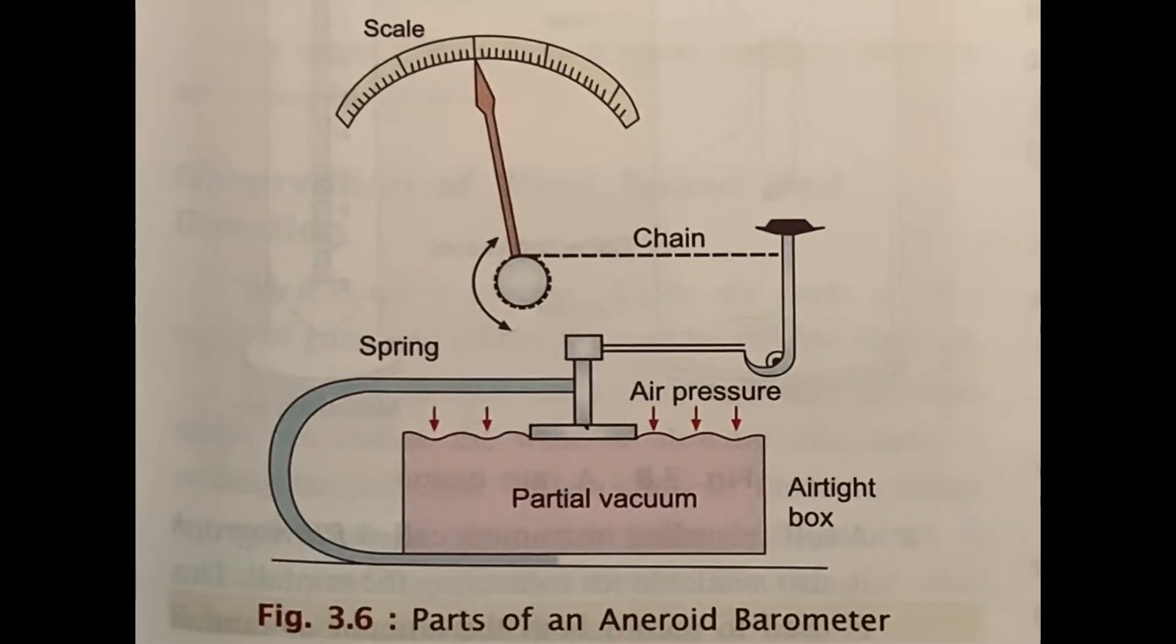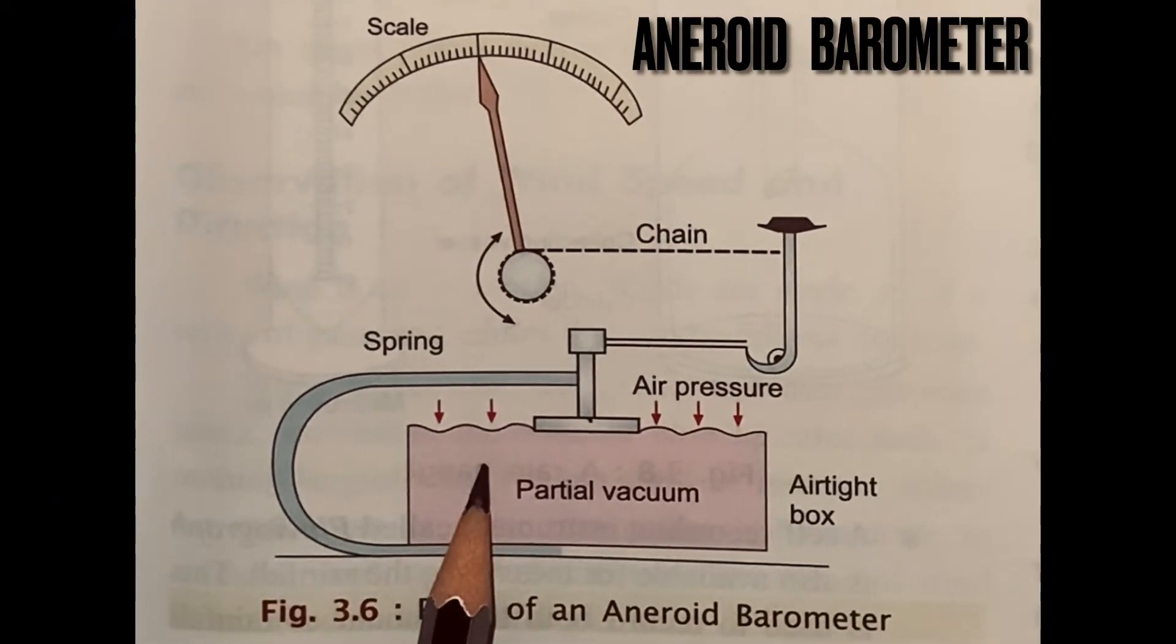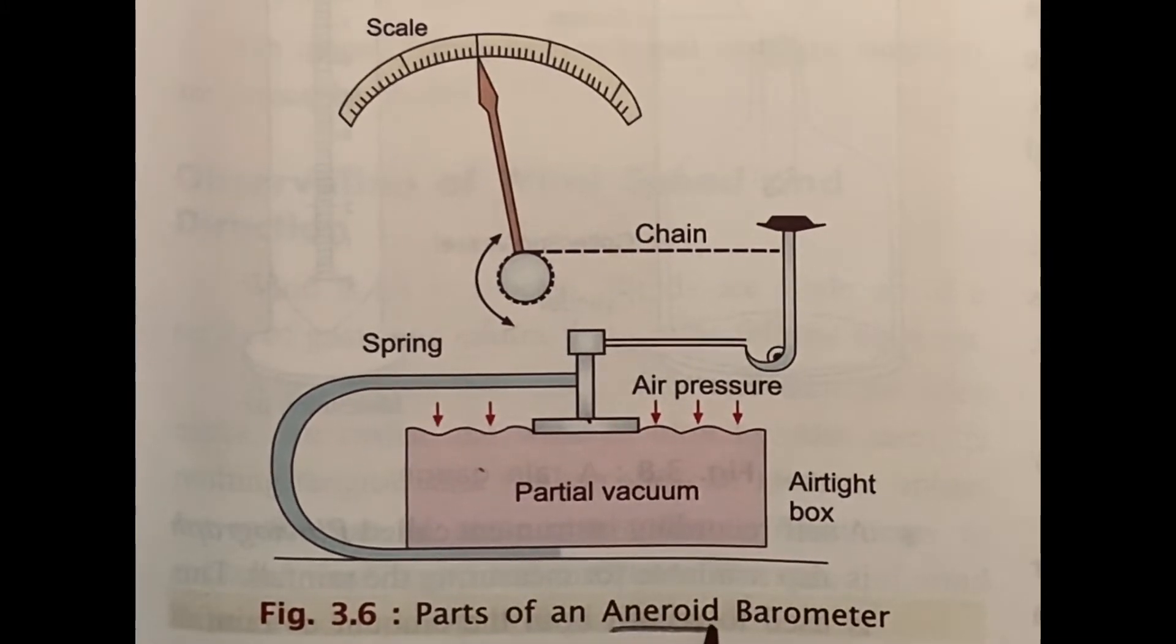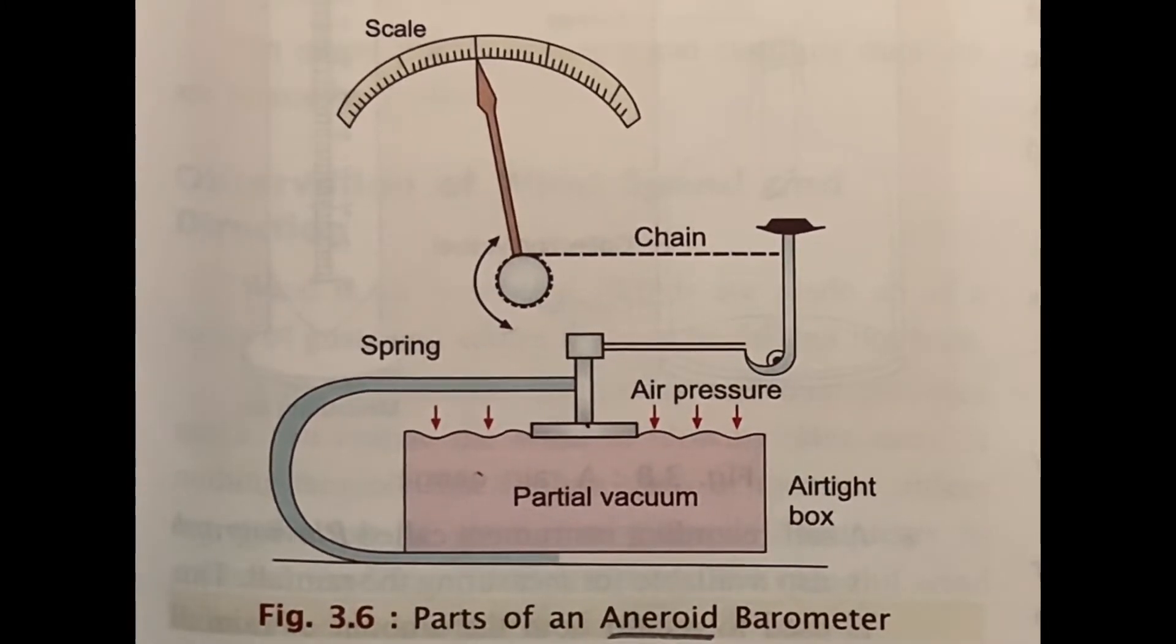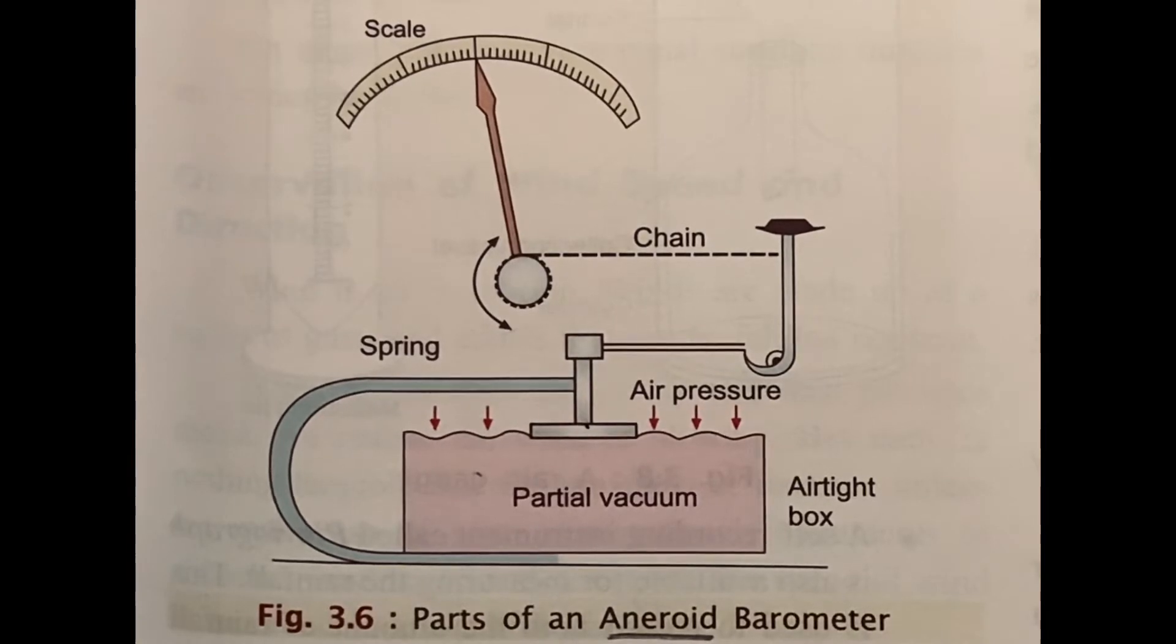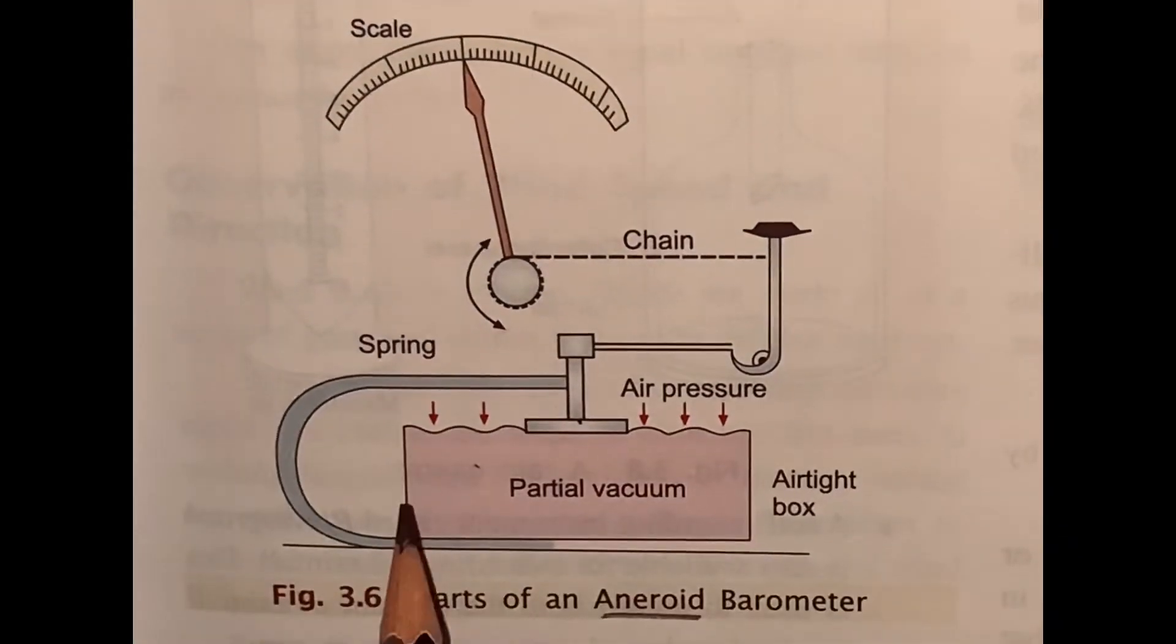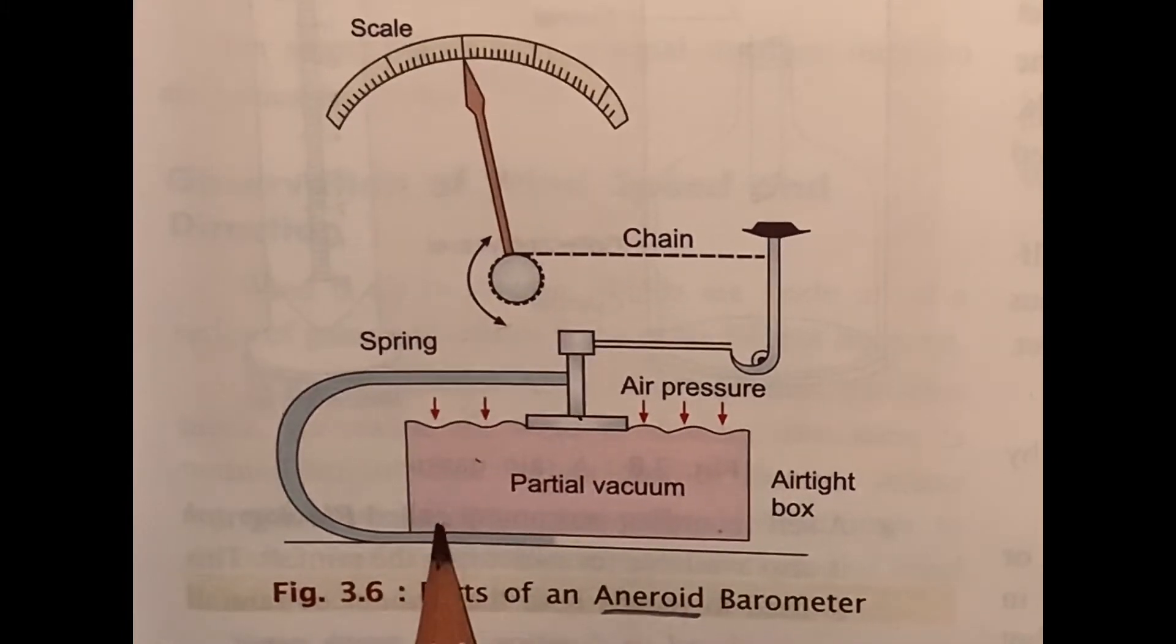The second one is aneroid barometer. It has no mercury column. The name aneroid itself means without water, which gives clear indication that there is no liquid in it. Aneroid barometer has a metal box which is partially evacuated.